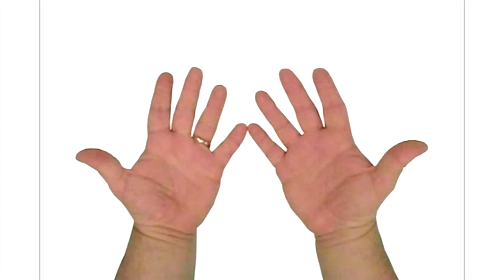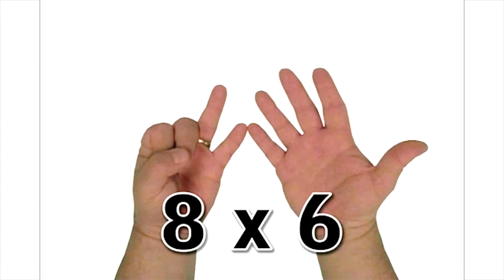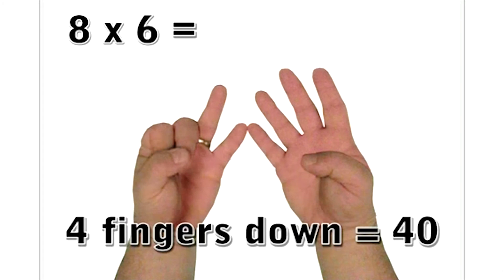To show it's no fluke, let's try another multiplication, say 8 times 6. This time we have a total of 4 fingers down, each worth 10, so our first number is 40.